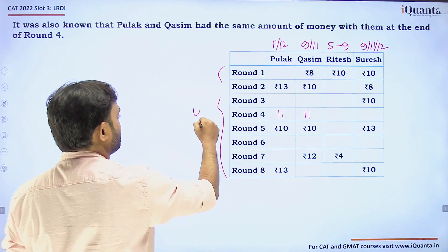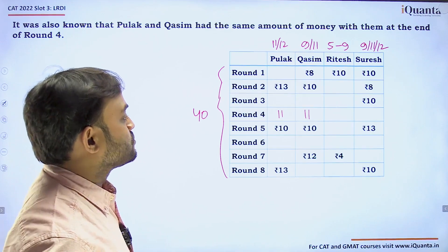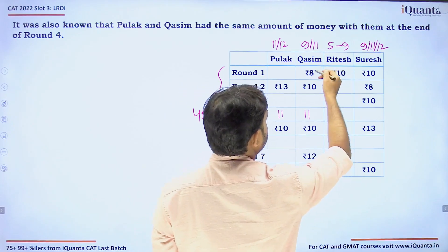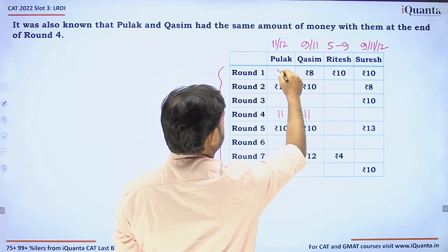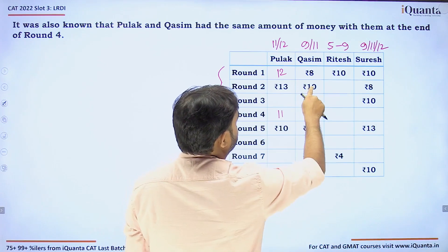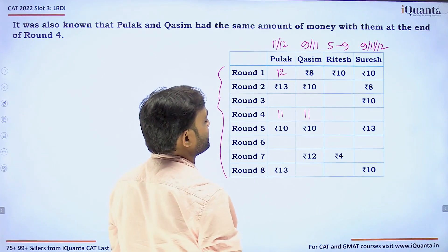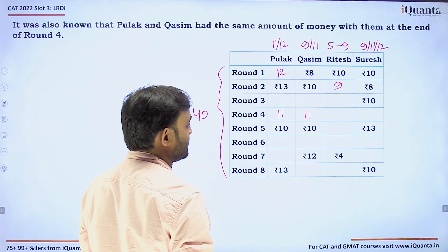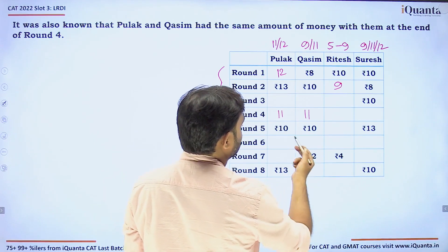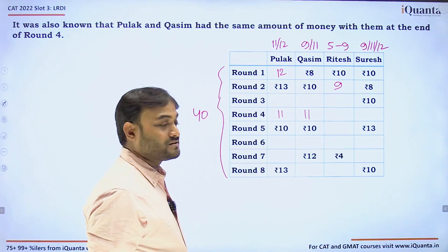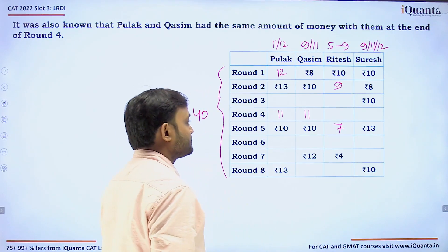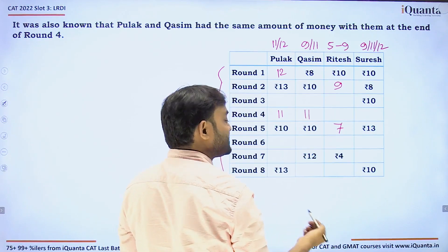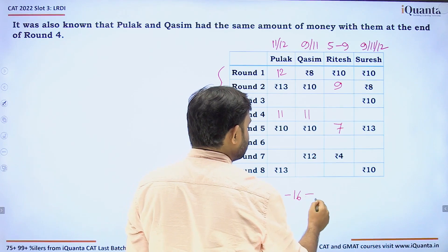In each round, the sum of all four players' amounts must equal 40. For Round 1: 10 + 10 + 20 + 8 = 28, so the missing value must be 12. For Round 2: 10 + 13 + 8 = 31, so the missing value is 9. For Round 3: 10 + 20 + 13 = 33, so the missing value must be 7. For Round 7: Kasim and Ritesh have 12 + 4 = 16, so Pulak and Suresh together must be 40 − 16 = 24.